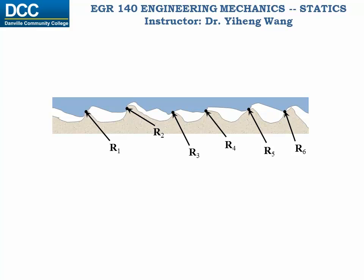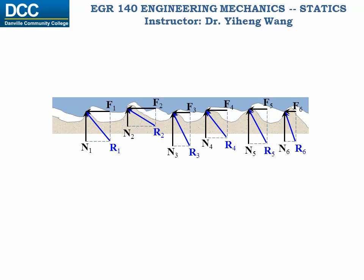How many of those forces are there? It's impossible for us to tell. What are the directions and magnitudes of these forces? Also impossible to tell. However, we do know that for each of these forces, we can resolve it into two components: one vertical component force N, and one horizontal component force F.